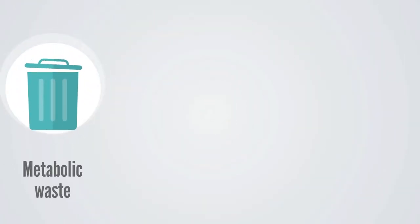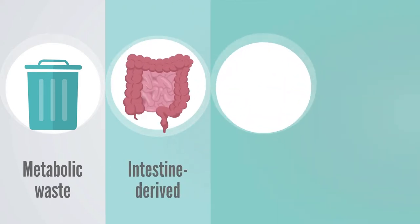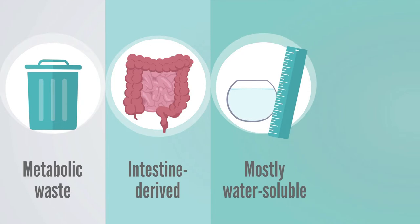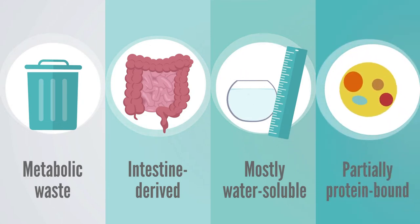Some of the uremic toxins are metabolic waste products. Others are derived from the intestine, all of which are mostly water-soluble and of differing molecular sizes, with some solutes being protein-bound.